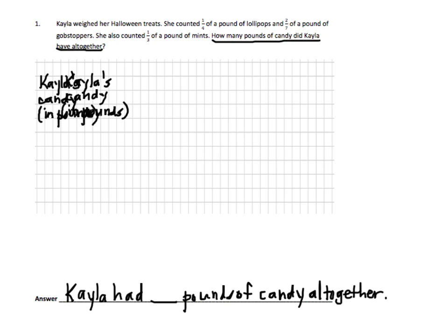It says: Kayla weighed her Halloween treats. Stop — no information that needs to be written down. Let's continue. She — she is Kayla — counted one-fourth of a pound of lollipops. Stop. I'm stopping because I see there's another number right after the word 'and.' She counted one-fourth of a pound of lollipops, so I'm just going to draw a bar and label that one-fourth. From here to here is one-fourth of a pound of candy.